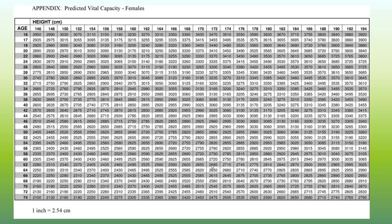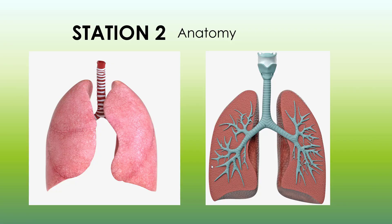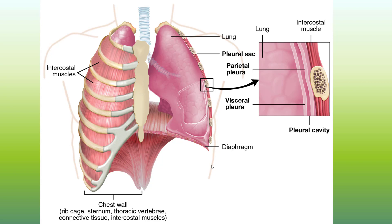Station two looks at the gross anatomy and histology of the lungs. On these models, you should be able to find the trachea, the primary bronchi, and where the alveoli would be. In this image you can also see the diaphragm and the intercostals as needed.